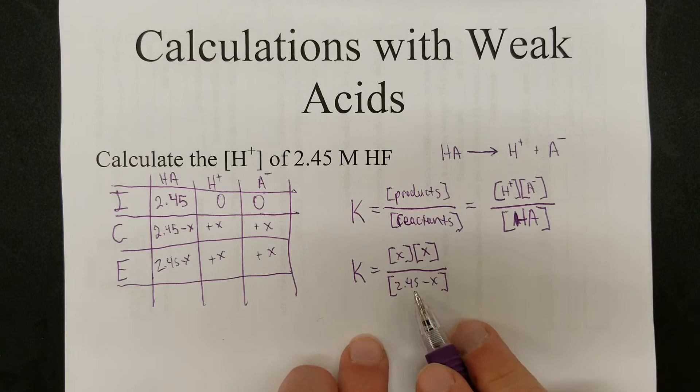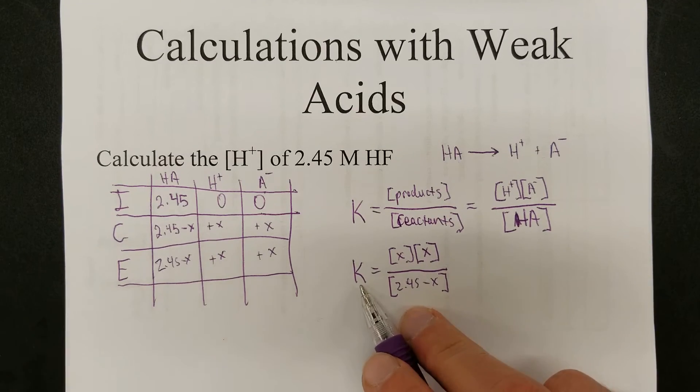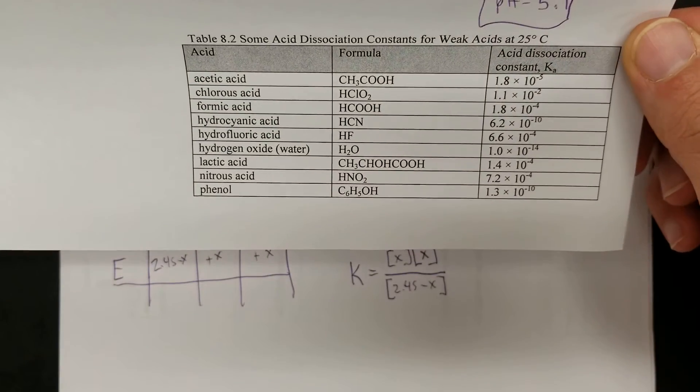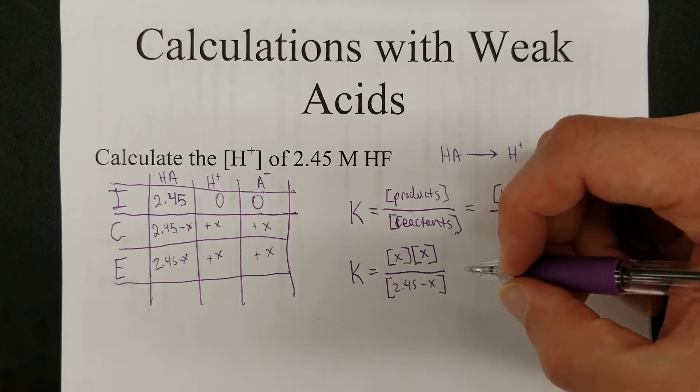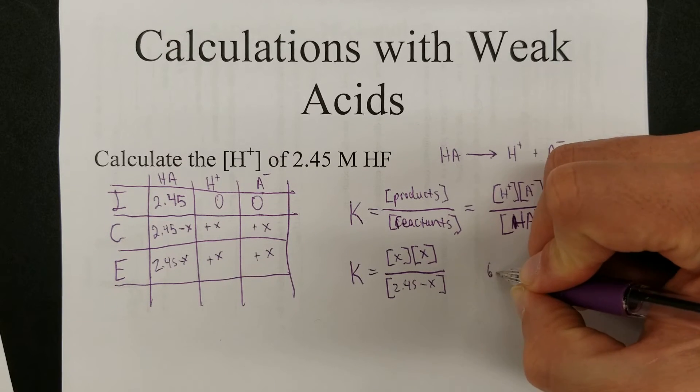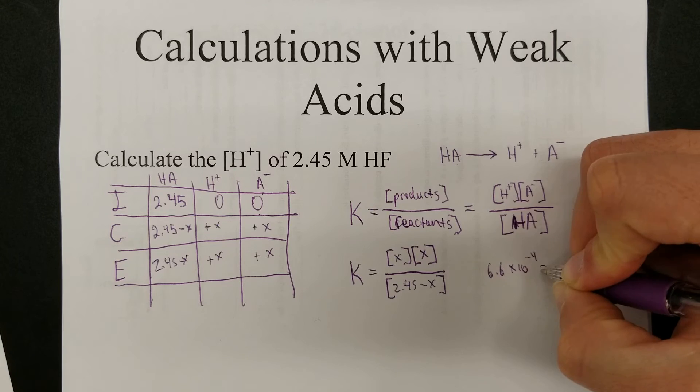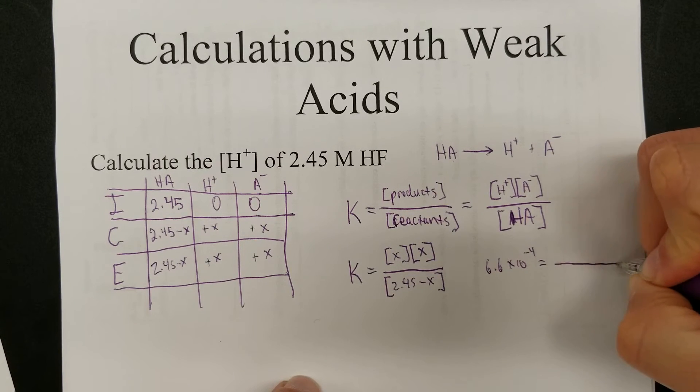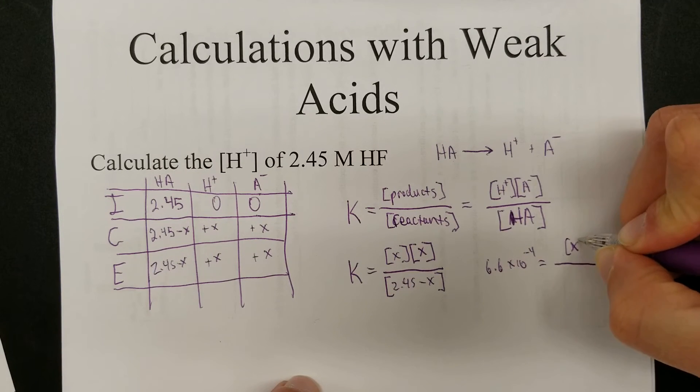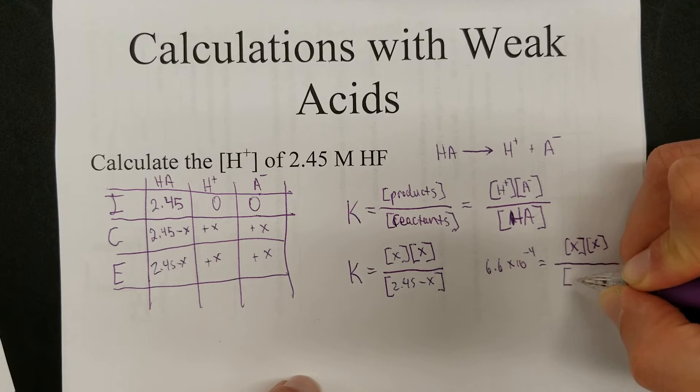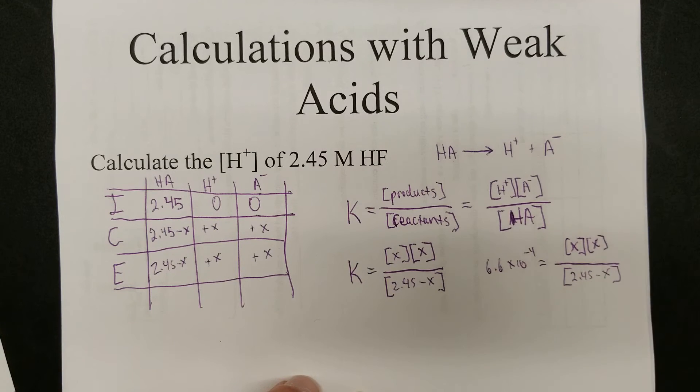I'm going to take this a step further by plugging in the dissociation constant, which is provided in a table that looks like this one. And for hydrofluoric acid, it is 6.6 times 10 to the negative fourth equals the hydrogen ion concentration times the anion concentration divided by the concentration of the acid, 2.45 minus X in this particular case.